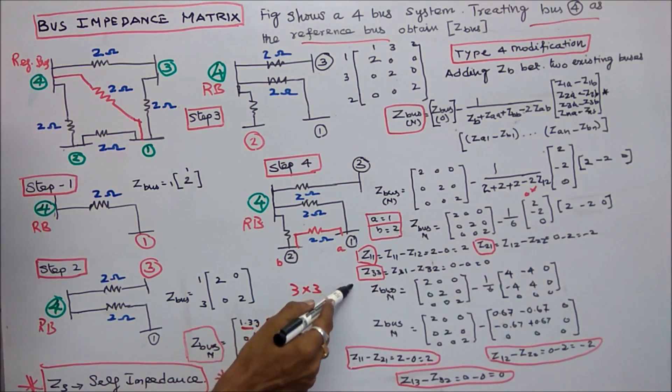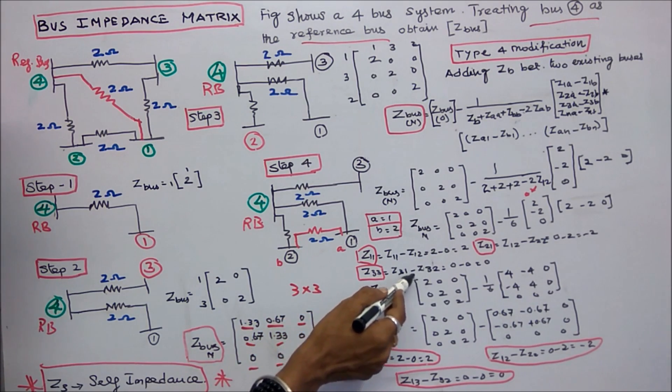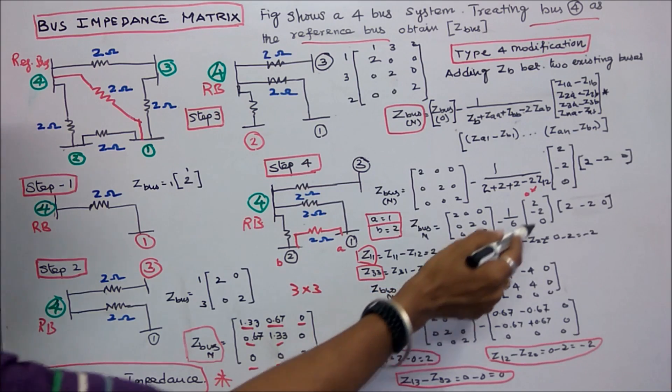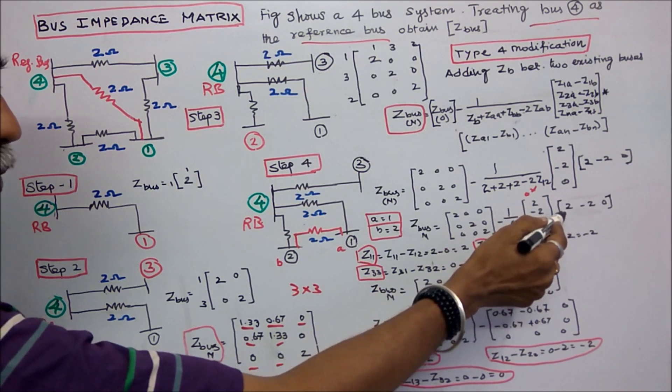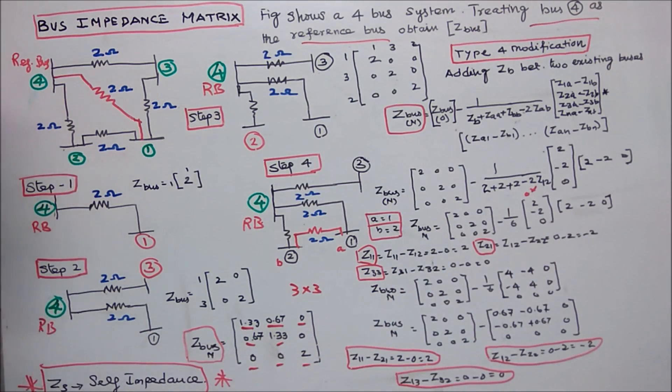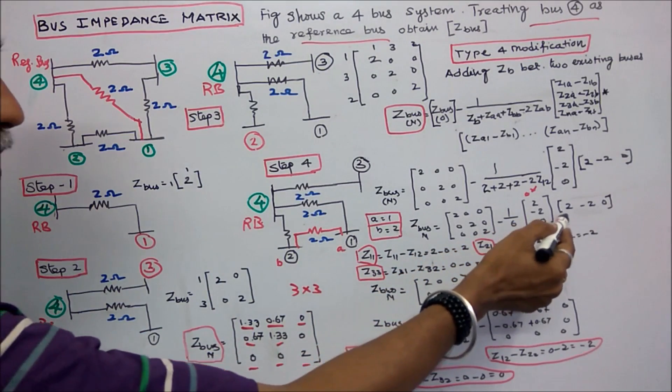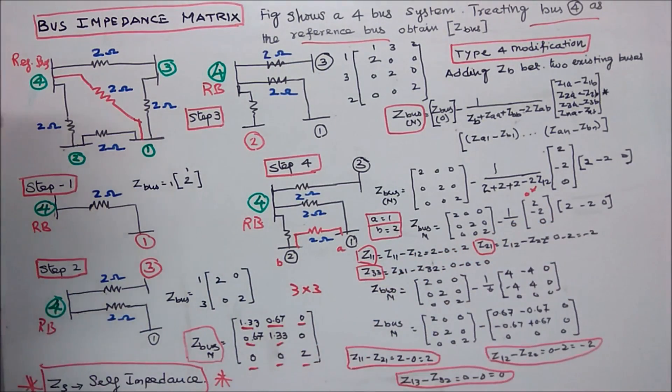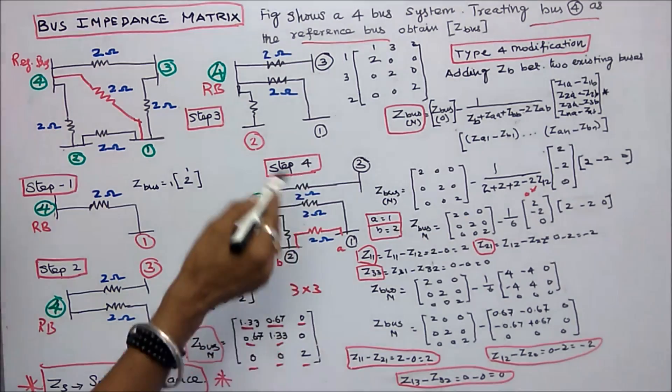Z13 is equal to Z12, Z13 is 0, therefore Z32 is 0. Simplify this and finally you got the new Z bus is equal to 1.33, 0.67, 0, 0.67, 1.33, 0, 0, 0, 2. This is the new Z bus for step 4.